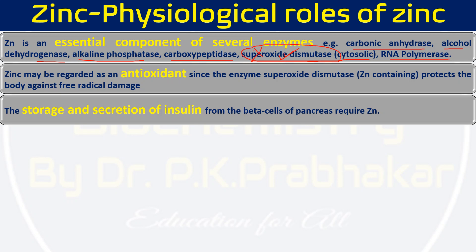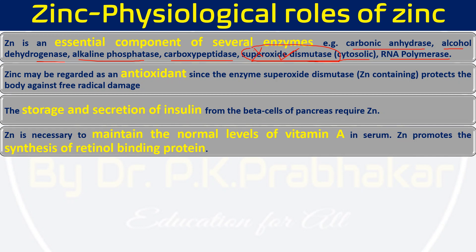Zinc is also required for the storage and secretion of insulin from the pancreatic beta cells. Without zinc, insulin will not be secreted or function properly. So zinc can also be considered to protect us from diabetes.